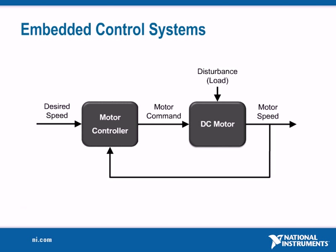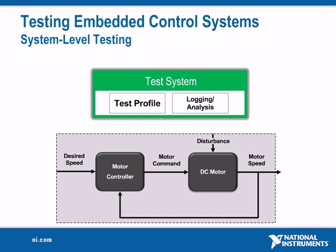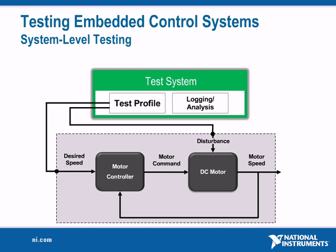The embedded control device manages motor speed in spite of any disturbances it may endure, such as a variation to the load on the motor. To accomplish this automatic control, the motor controller monitors the instantaneous speed of the motor and then adjusts the output command to that motor to achieve the specified speed set point. To test this system, we would create a stimulus response test that applies both a speed and load profile, simulating the expected operating conditions.